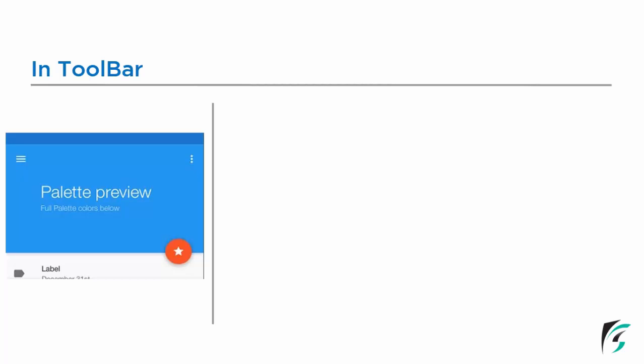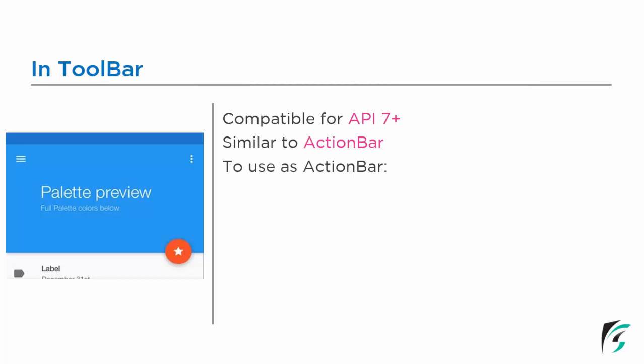The toolbar is compatible for API level 7 and above. The toolbar was introduced with the Android material design support that was introduced for API level 21 and above — that is, for devices with Lollipop version and above. Before the toolbar was introduced, we used action bar as the app bar in our application. Hence, the toolbar is compatible for API level 7 and above because we can use toolbar as action bar too. To use toolbar as action bar for devices with API level below 21, we need a few methods: setSupportActionBar, which provides the backward compatibility for our Android application, and setActionBar, which can also be used to use toolbar as action bar.